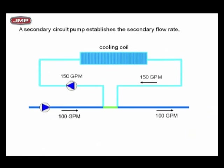So we add the secondary pump, which establishes a secondary flow rate. Now we have probably the first time you've seen the total simple little circuit — primary pump at 100 GPM and the secondary circuit in this case at 150 GPM. If I've got 100 GPM in the primary loop and a pump in the secondary loop taking out 150 GPM, is that possible? Absolutely. So I've got 150 GPM in the cooling coil circuit and 100 GPM in the primary circuit. What will be the flow in the common pipe and in what direction? The answer is 50 GPM in reverse flow. This is what's going to happen because there's no pressure drop in the common pipe.